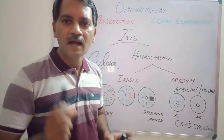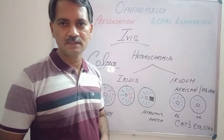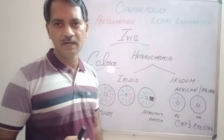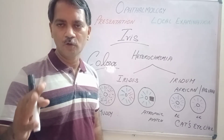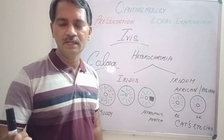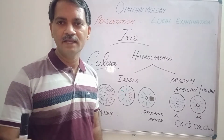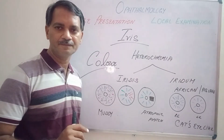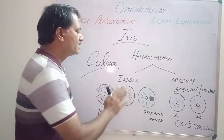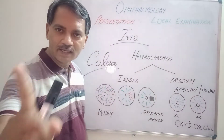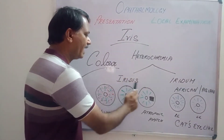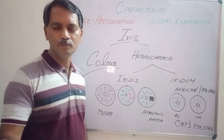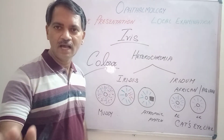Coming to the color and its abnormality in the iris: color of the iris can be normal for the particular race. For Indians it is brown, for Europeans it may be lighter, for Africans it will be black. Sometimes the color of the iris may be different for that particular race. If it is affecting only one eye, it is called heterochromia iridis. If the color of the iris has changed in both eyes, it is called heterochromia iridum.